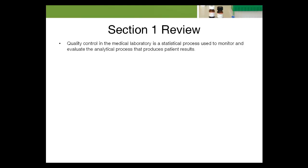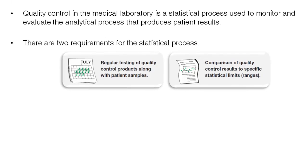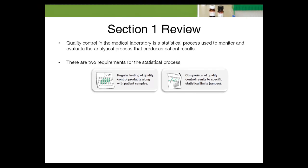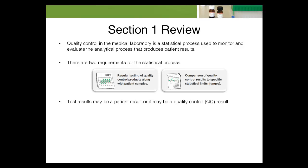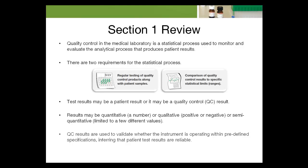We've reached the end of this module. Let's review some basic points. Quality control in the medical laboratory is a statistical process used to monitor and evaluate the analytical process that produces patient results. There are two requirements for the statistical process: regular testing of quality control products along with patient samples, and comparison of quality control results to specific statistical limits. Test results may be a patient result or a quality control (QC) result, and may be quantitative, qualitative (positive or negative), or semi-quantitative. QC results are used to validate whether the instrument is operating within predefined specifications, inferring that patient test results are reliable.